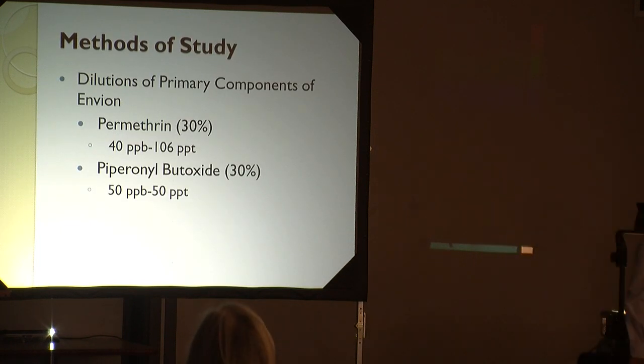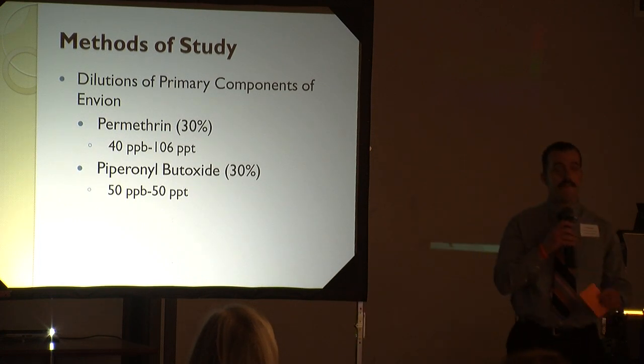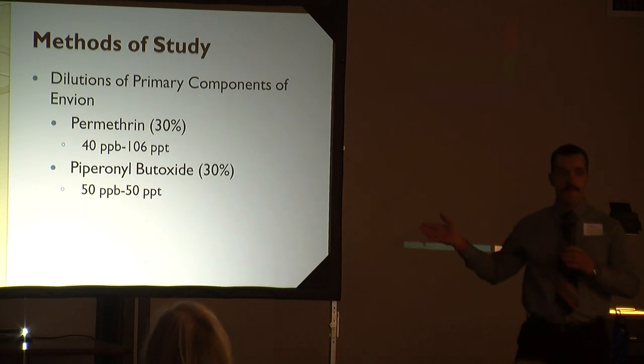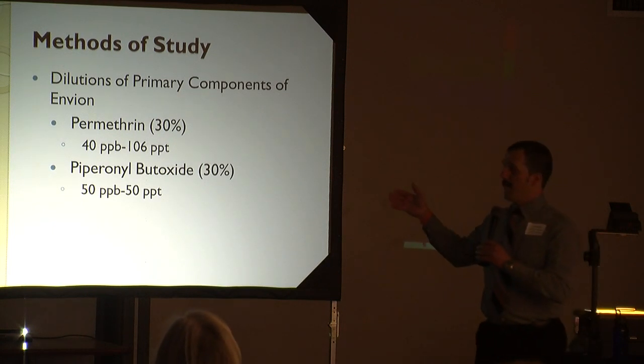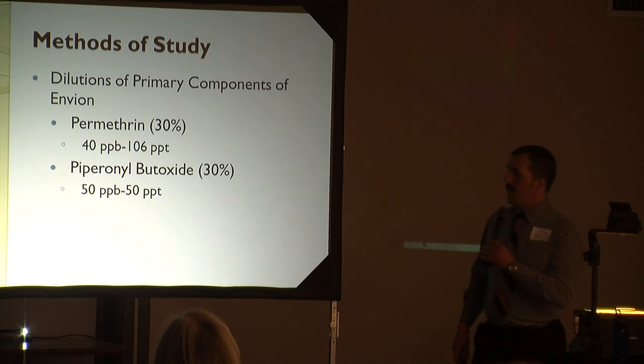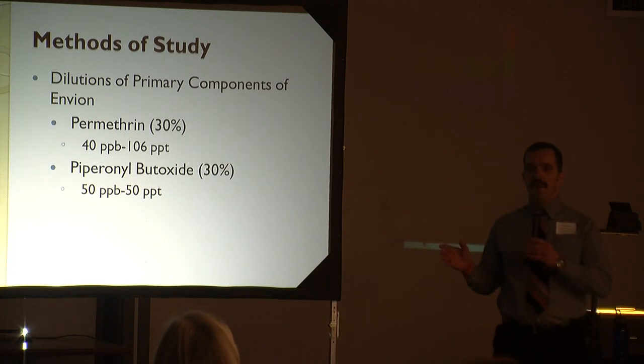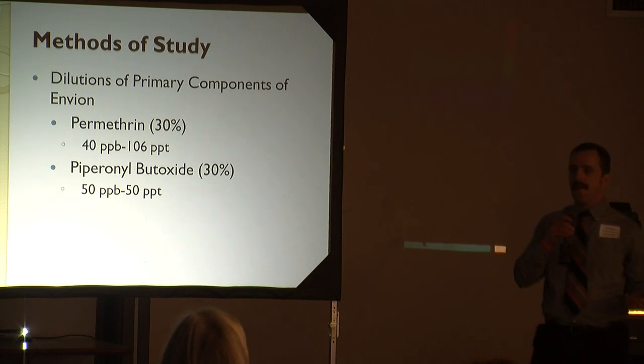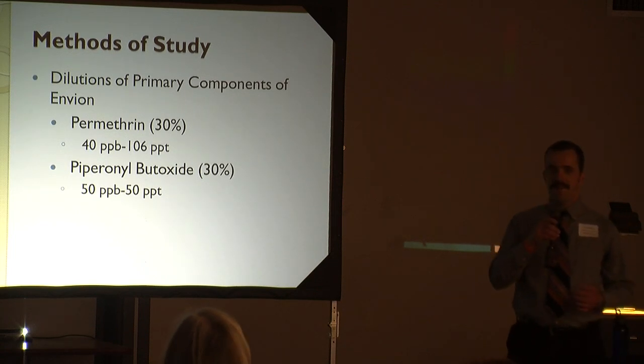As Sam mentioned, Alamosa Mosquito Control has recruited us to find what's called the detection limits for their primary components in their Envion. In order to do that, we started off by getting several dilutions of their primary components: permethrin, 40 parts per billion to 106 parts per trillion, and piperonyl butoxide, 50 parts per billion to 50 parts per trillion. The dilutions were to generate a calibration curve in order to find the detection limits. Just to give you an idea of just how small a part per trillion is, take for instance the piperonyl butoxide at 50 parts per trillion - it's like 50 molecules of piperonyl butoxide for every one trillion molecules of water. It's really not that big.